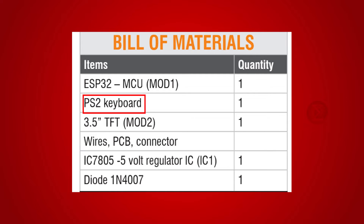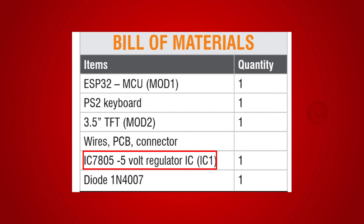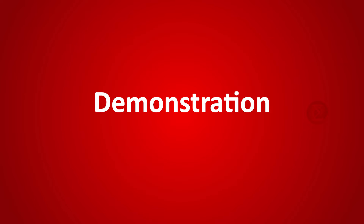A PS2 keyboard is used to type the questions you want to ask from ChatGPT. A 5V regulator IC7805 is used to get a regulated power supply of 5V, and a diode is also used. Let us see the demonstration of this project.